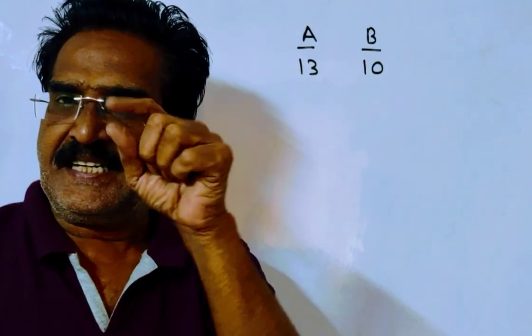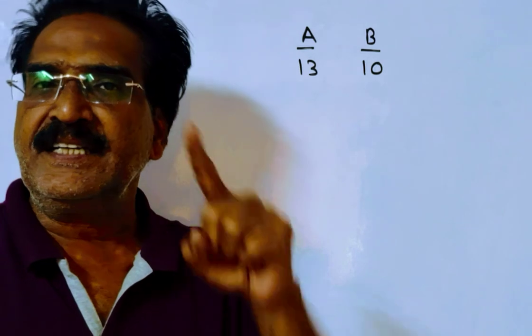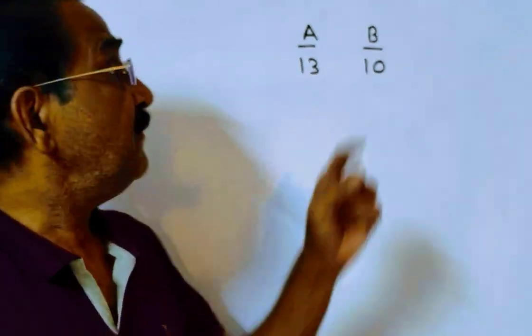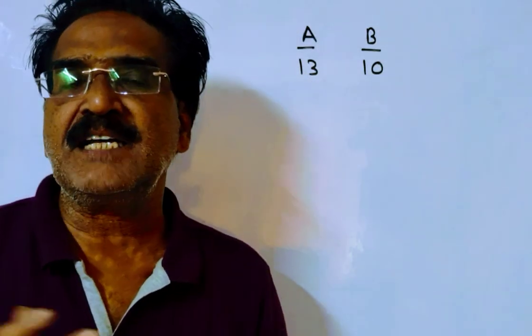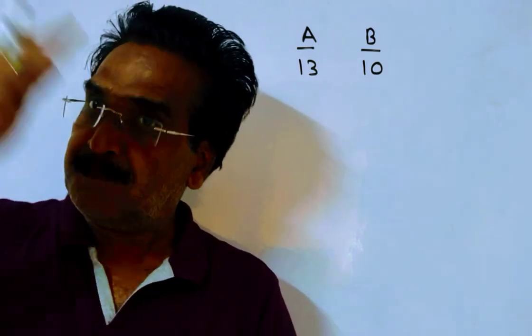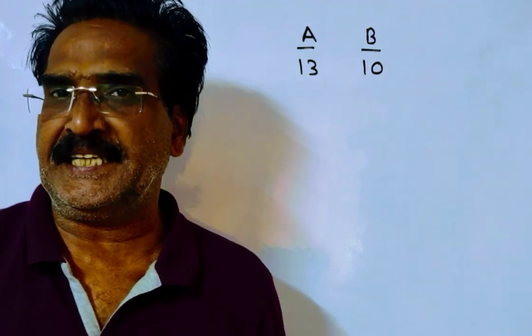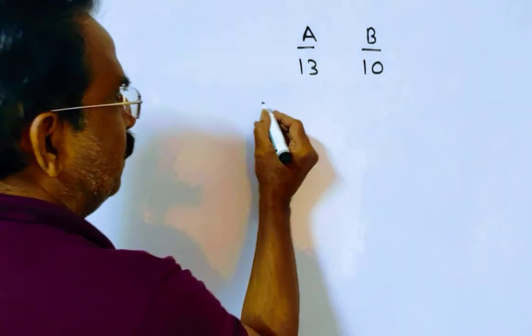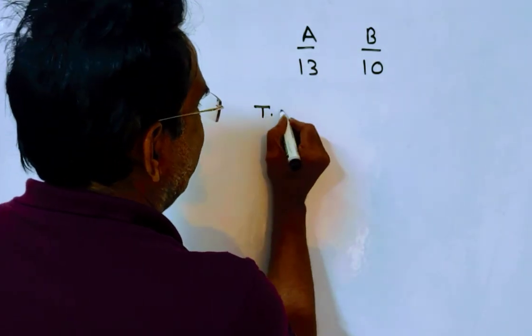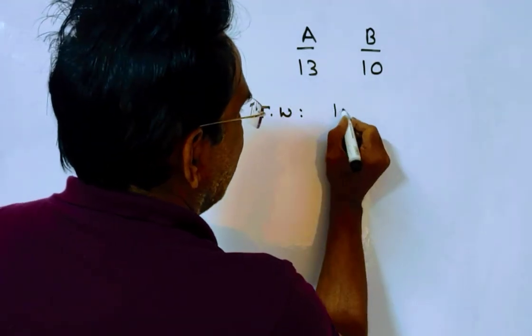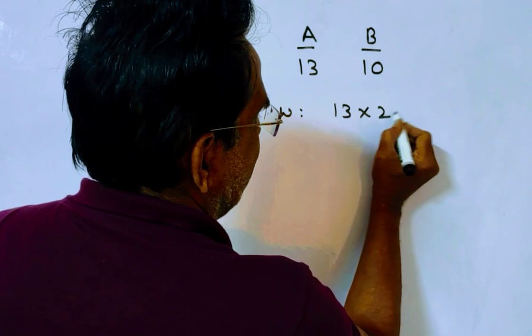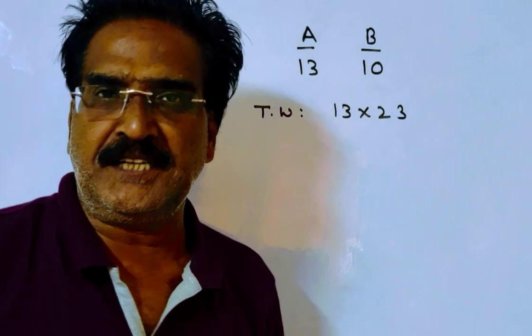Now it is given that A can complete the work in 23 days. A can do 13 units of work per day and he completed the work in 23 days. That means the total work must be 13 into 23 units.